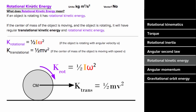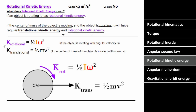What does rotational kinetic energy mean? If an object is rotating or spinning, it has rotational kinetic energy. If the center of mass is also moving, the object has both translational and rotational kinetic energy. The formula for rotational kinetic energy is (1/2)Iω², which parallels the formula for regular kinetic energy: (1/2)mv².